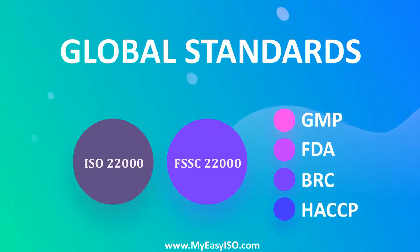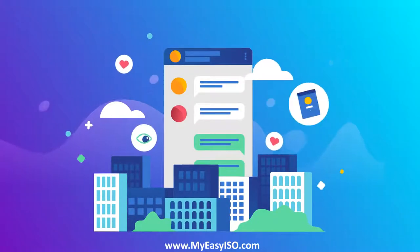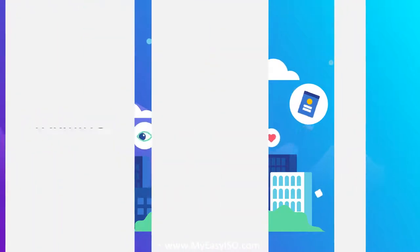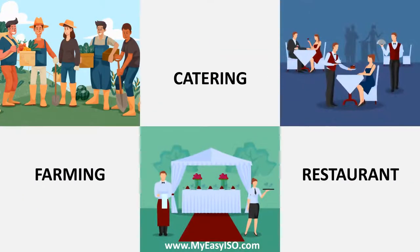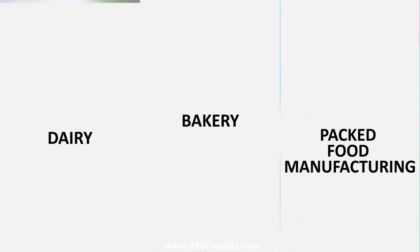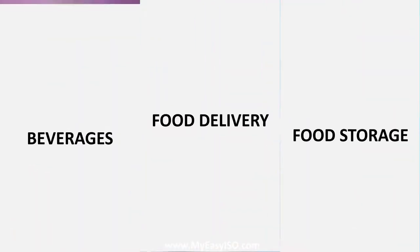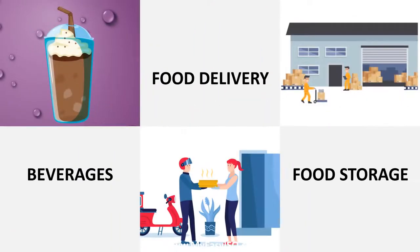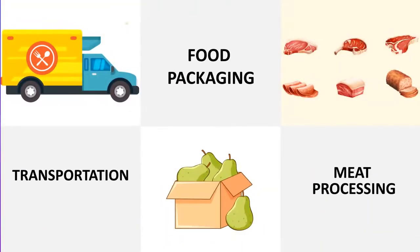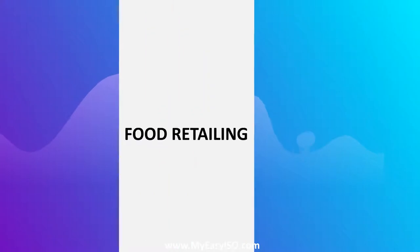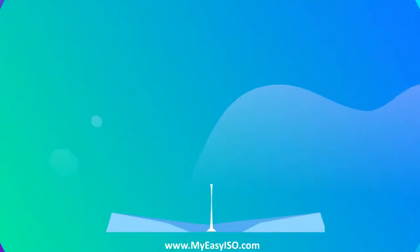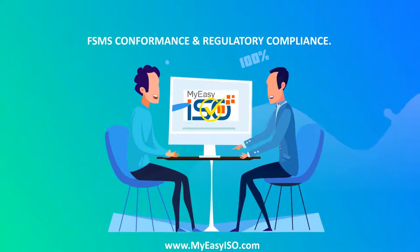Companies from various domains in the food chain like farming, catering, restaurant, dairy, bakery, packed food manufacturing, drinks, food delivery, food storage, transportation, food packaging, meat processing, and food retailing can trust MyEasyISO for their FSMS conformance and regulatory compliance.